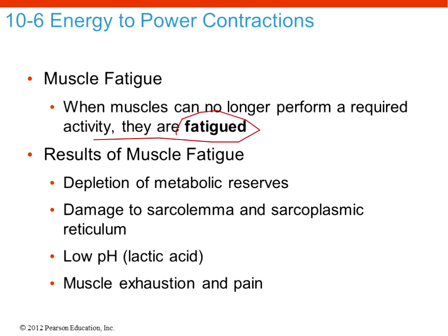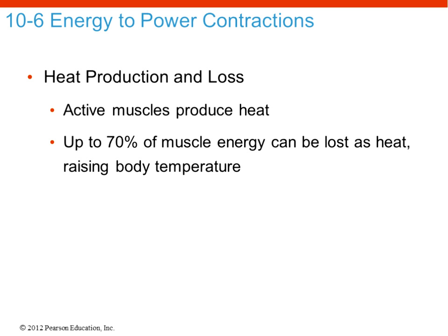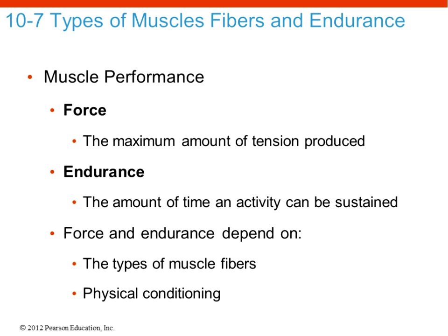When muscles can no longer perform a given activity, we say they are fatigued. This can result from depletion of metabolic reserves and nutrients, lactic acid impacting pH, or damage to the membrane. Active muscles also produce heat, contributing to a rise in body temperature during exercise — sweating helps release some of that heat from the skin surface.